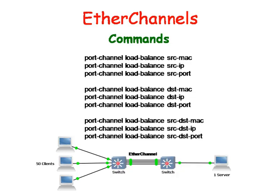If you have a network with 50 computers on the left and one server on the right, it would be better to load balance using the 50 computer MAC addresses rather than the one computer MAC address. This is because the single server hash value will compute only to one value if you are using the one MAC address or IP address of the server, and so only one Ethernet line that connects the two switches will be used to transfer information. But if you choose a hash value computed from the 50 clients, this is more likely to be a more random distribution of numbers, so it's more likely that all the Ethernet interfaces will be used.